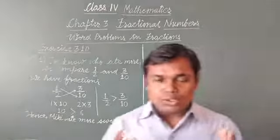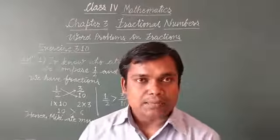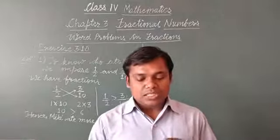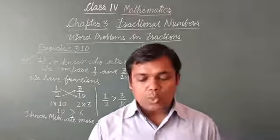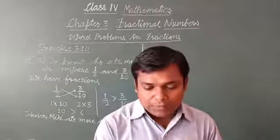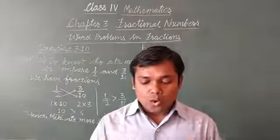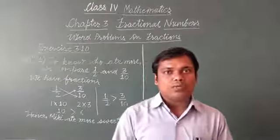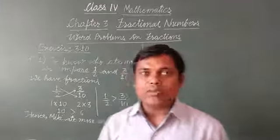Now I am going to solve question number 3. Please read the question. It is given that 2 bags contain 3/4 kg and 1/8 kg of sugar respectively. One bag contains 3/4 kg of sugar and another bag contains 1/8 kg of sugar. We have to find the total quantity of sugar in these 2 bags.